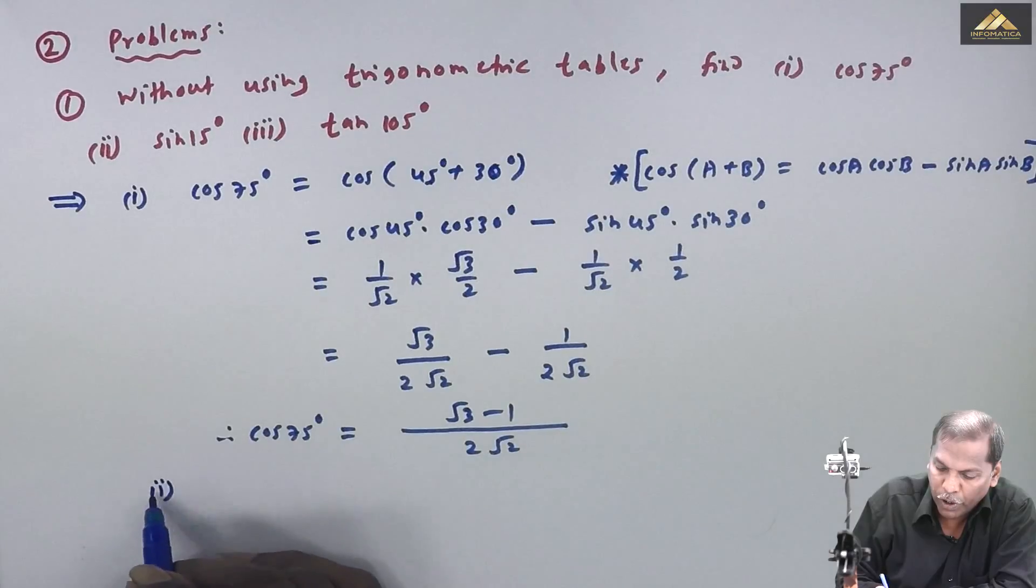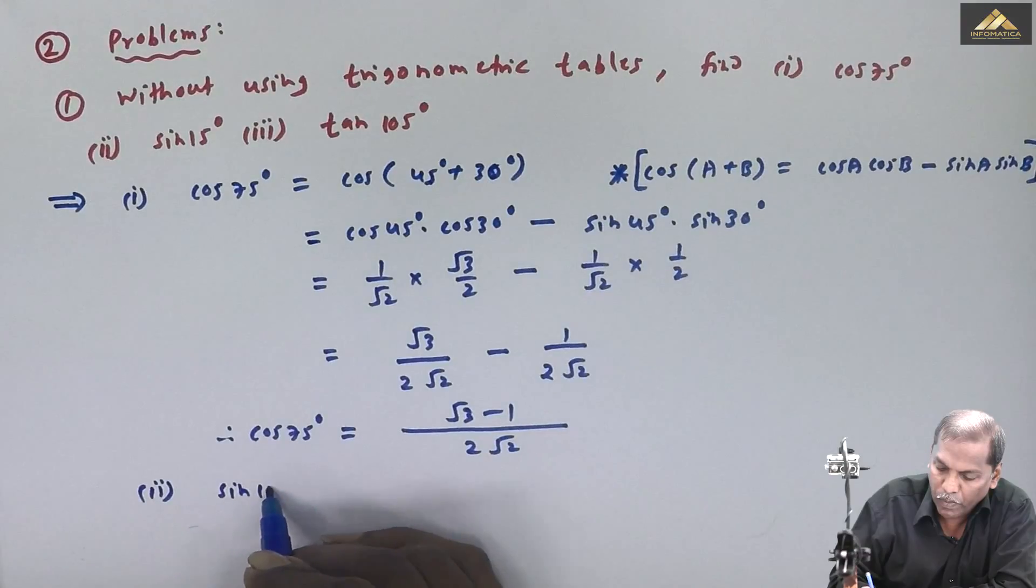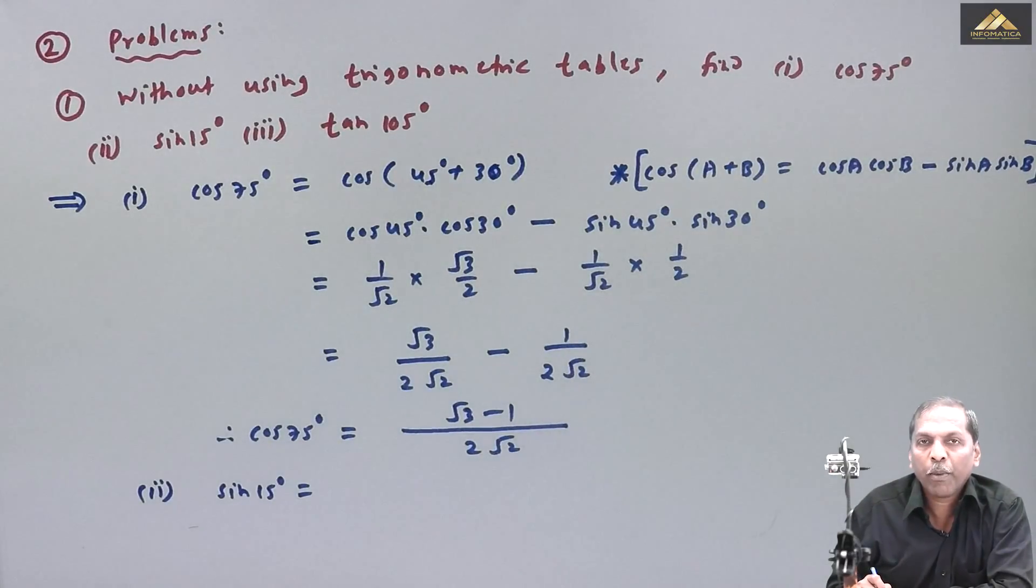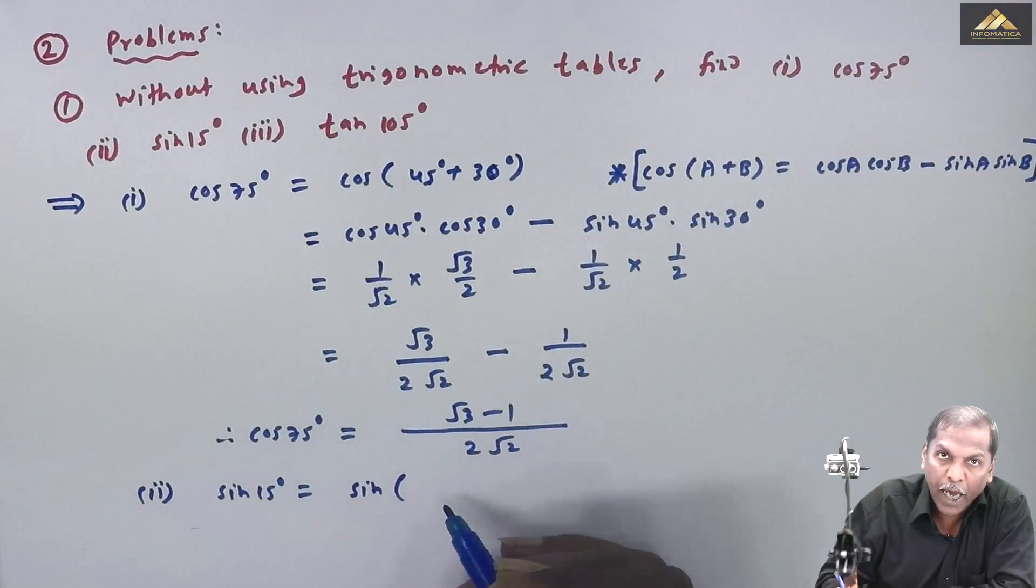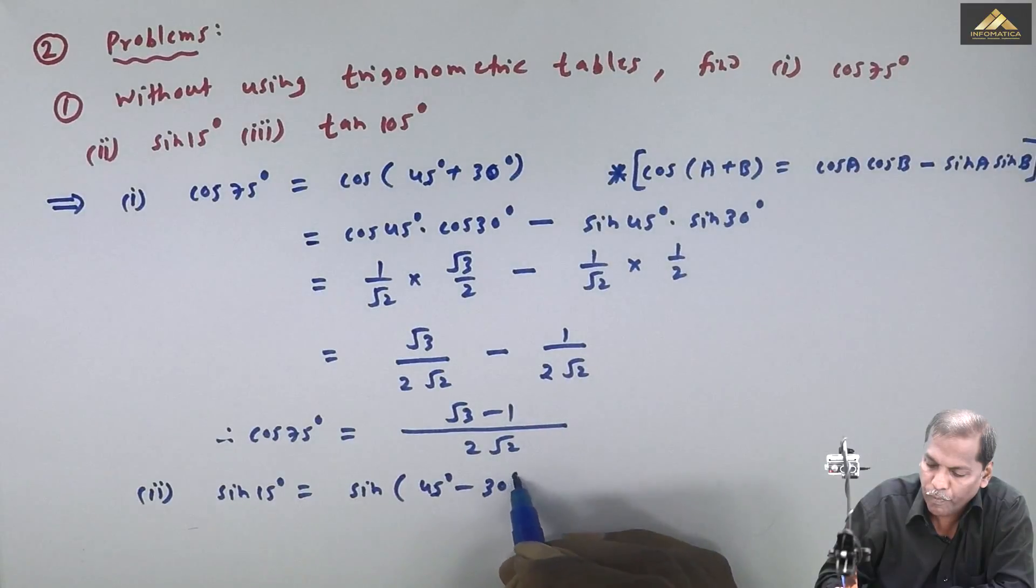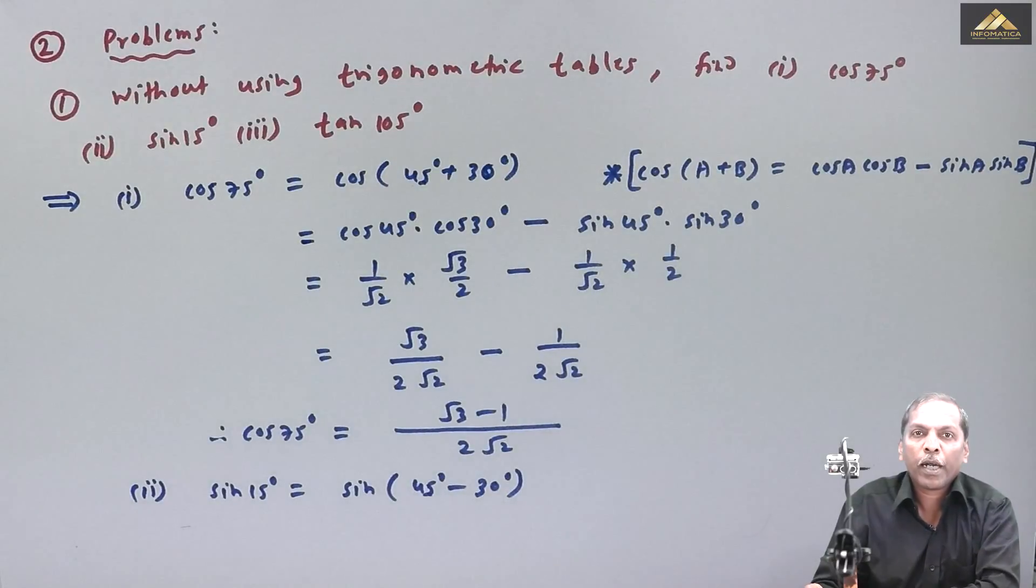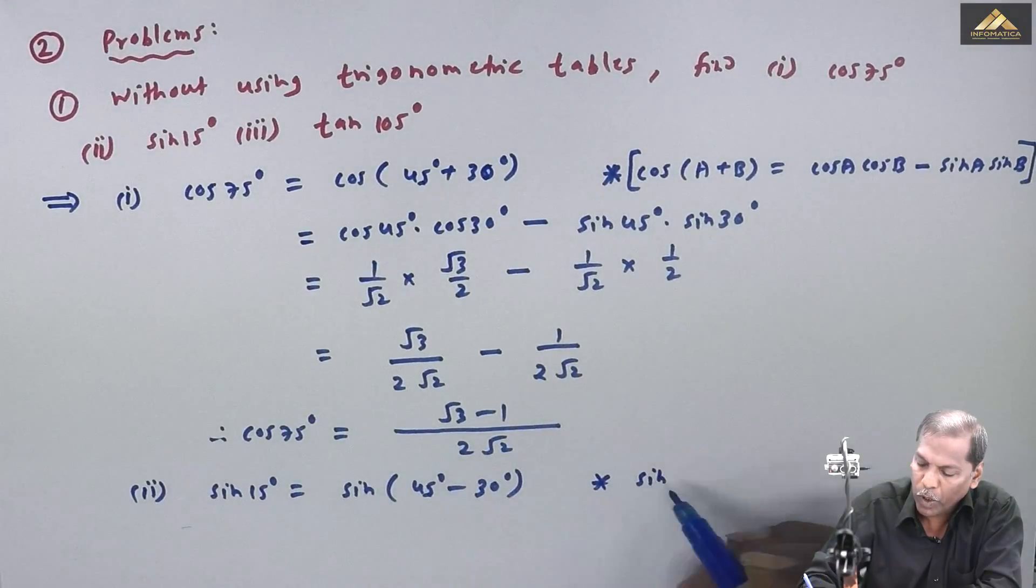Now let's see the second question, that is sin 15 degree. Here for 15 degree, the given angle, we need to adjust in terms of 30 degree, 45 degree, 60 degree. So 15 degree can be written as sin of 45 degree minus 30 degree. Observe here, we have the formula sin of (a minus b).